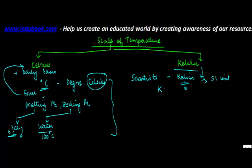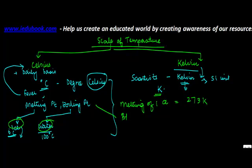Now I told you about two reference points for Celsius. To make a comparison: the melting point of ice takes place at 273 Kelvin, and the boiling point of water is 373 Kelvin. If you notice, in Celsius it was 0 and 100, and here it is 273 and 373 — so in both cases the difference is 100.